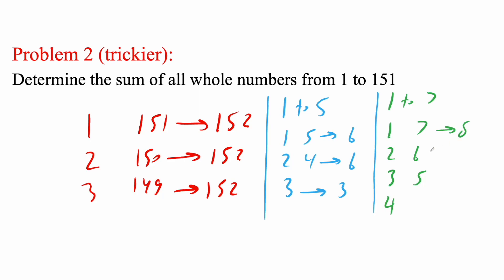1 plus 7 is 8. 2 plus 6 is 8. And 3 plus 5 is 8. And so the median is 4. So it's half of 8. Here median was 3. Half of 6. So with that, I think I know a pattern.